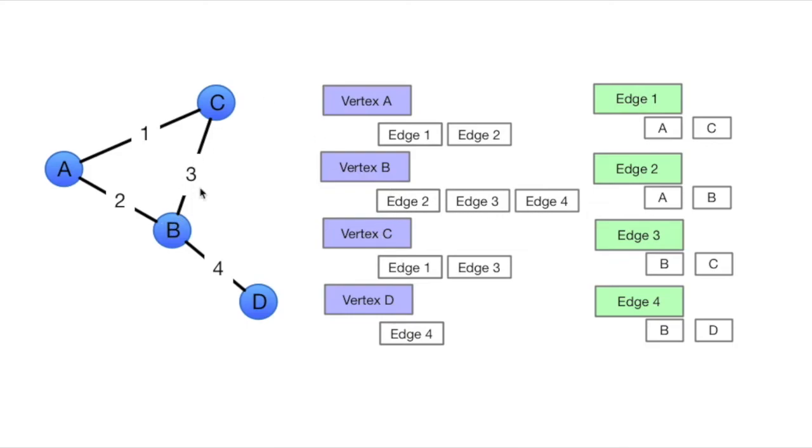Vertex C is edges 1 and 3. Vertex D, edge 4. You'll note this data structure, you can have as many edges you want on each vertex, and again use a linked list, something that will easily grow, and it can vary based on the number of individual vertices. In most graphs you've got a relatively small number of edges connected to each vertex.